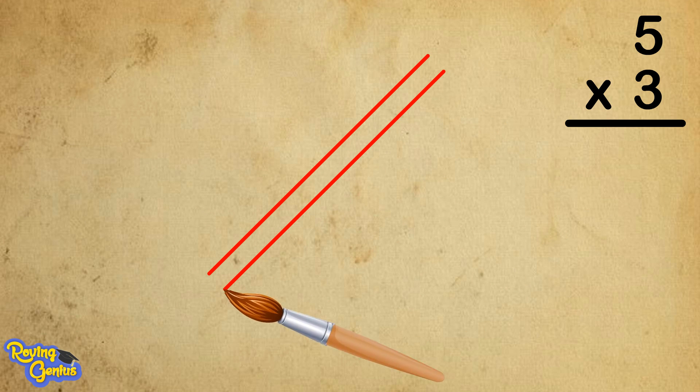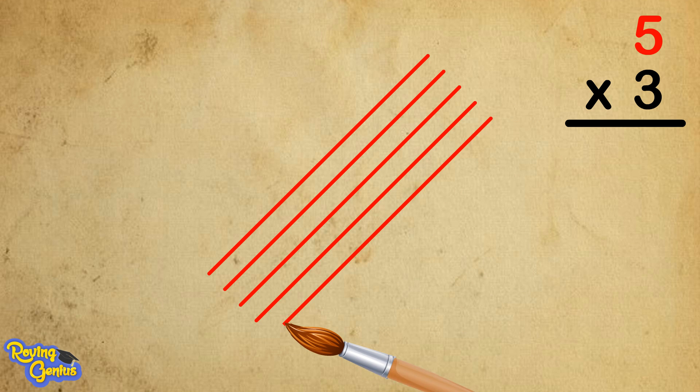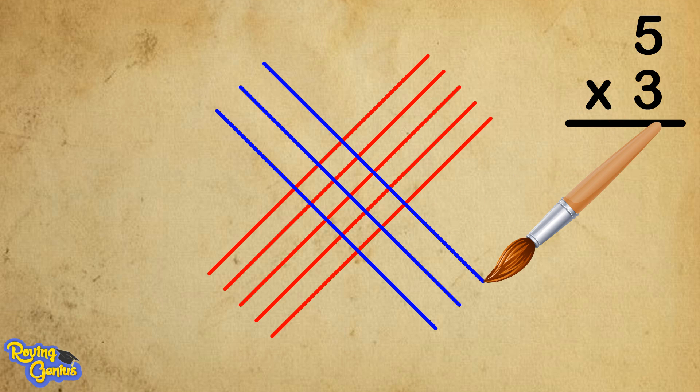Let's start with the simplest. Here we multiply 5 by 3. Draw 5 lines representing 5 and cross these lines with 3 lines representing 3. Now let's count the intersections. We get 15, so the answer is 15.